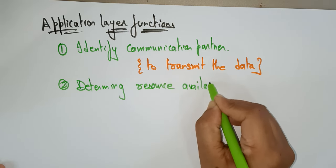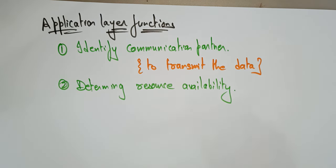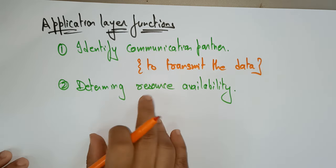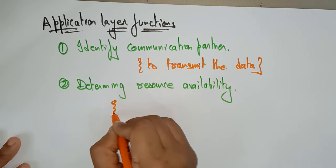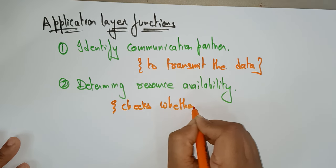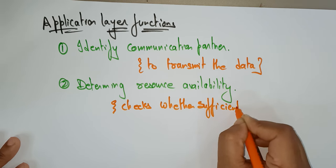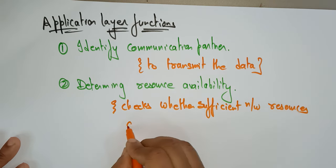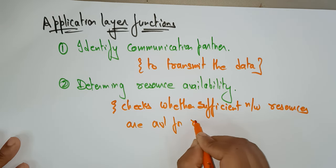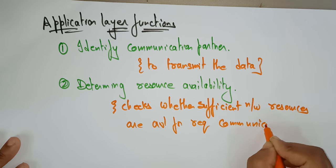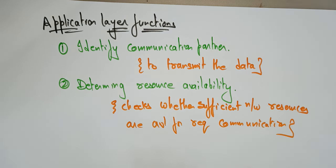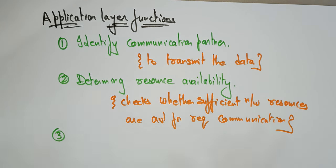The second function is determining resource availability. Just like the client-server model, it checks whether sufficient network resources are available for the required communication or not. The server checks whether the request from the client is a proper request. The application layer determines whether sufficient network resources are available for the required communication.